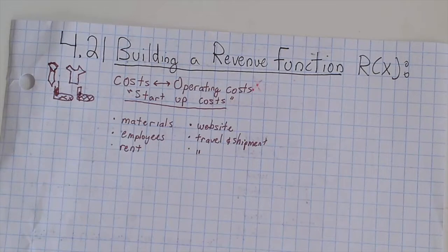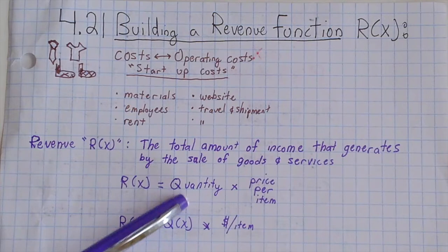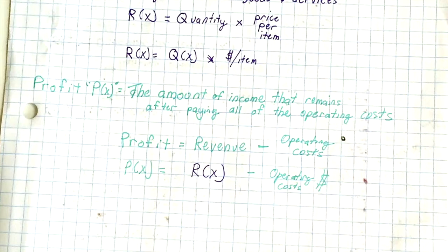This all leads up to our revenue. Now what revenue is, is the total amount of income that generates by the sale of goods and services. It is the amount of products that you're selling multiplied by the price per each item. It can be also written as R(x) equals Q(x) times the amount of dollars per item. This is what's going to lead into the importance of understanding what profit is. Profit is the amount of income that remains after paying all of the operating costs. Therefore, the equation profit equals revenue minus operating costs. Or more algebraically, P(x) equals R(x) minus operating costs.